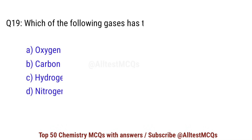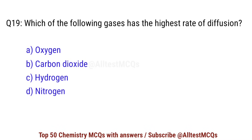Question number 19. Which of the following gases has the highest rate of diffusion? Correct option is C: hydrogen.